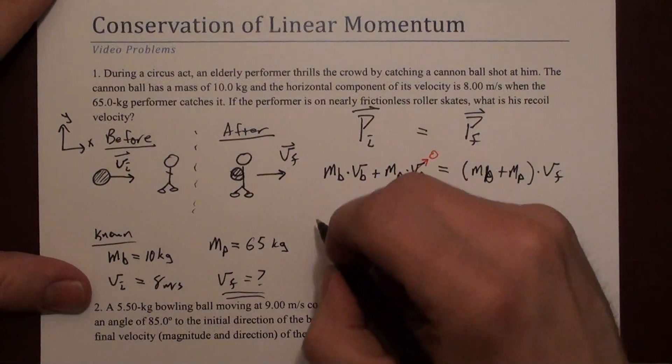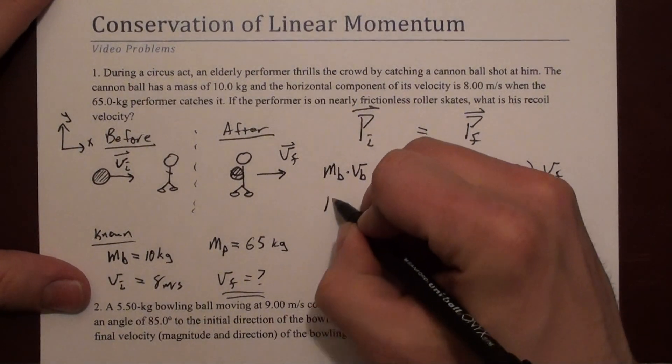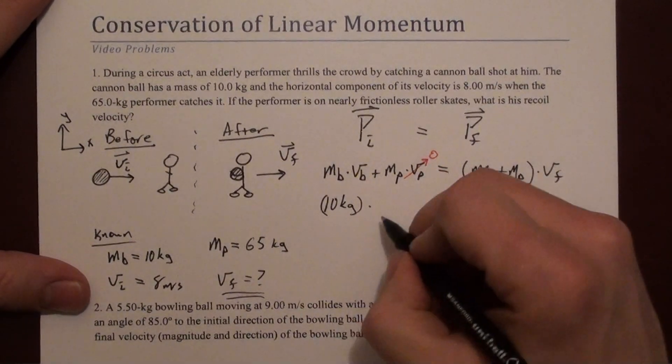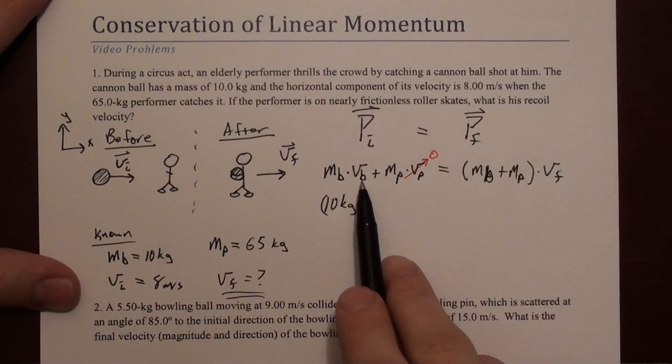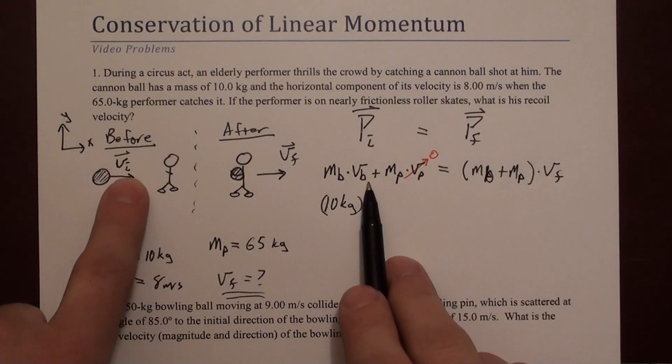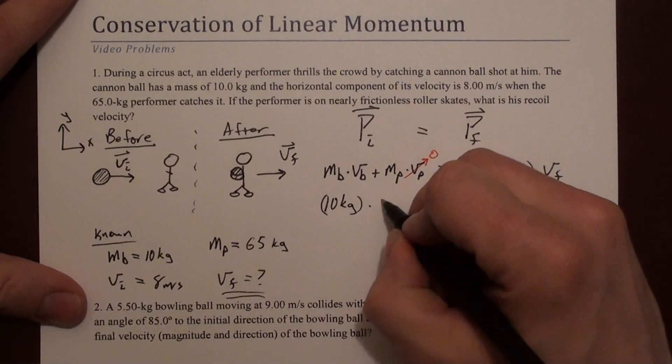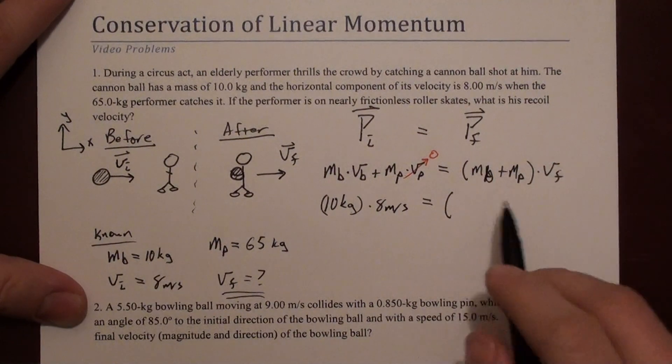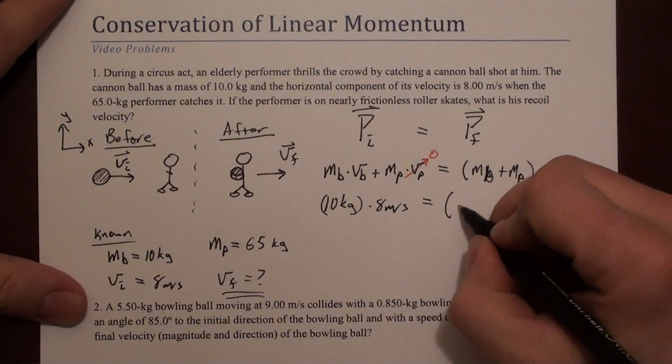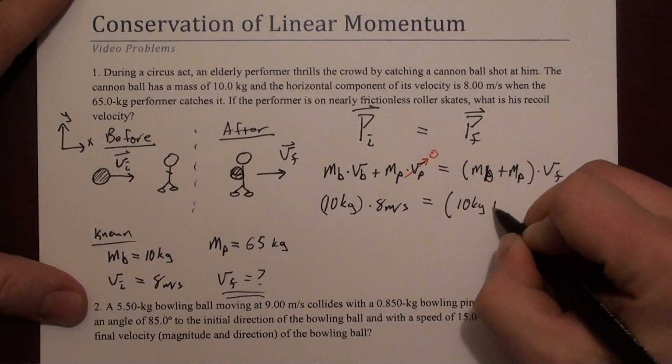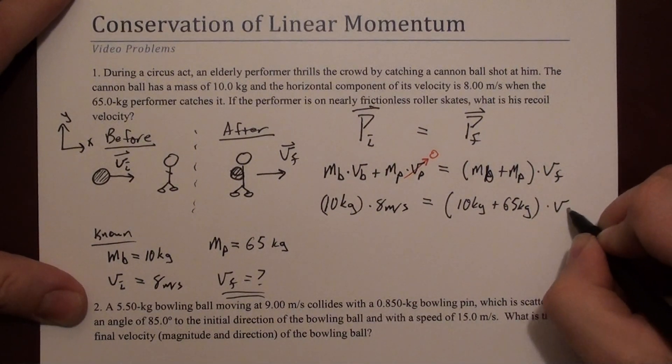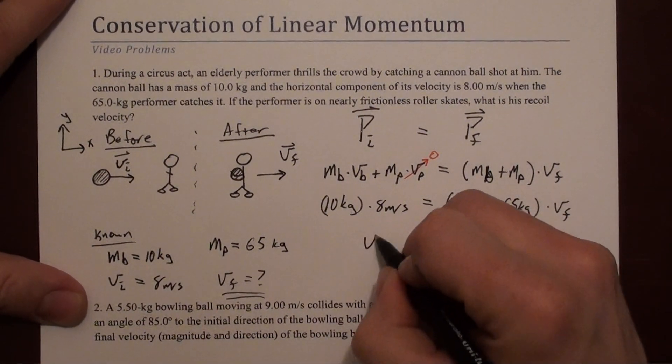Let me just plug in some numbers now. The mass of the ball is 10 kilograms. The velocity of the ball is actually v initial, that's 8 meters per second. And that equals the sum of the masses, 10 kilograms plus 65 kilograms times the final velocity.